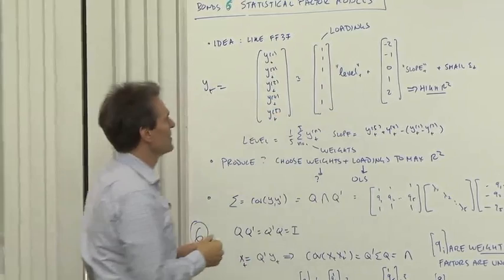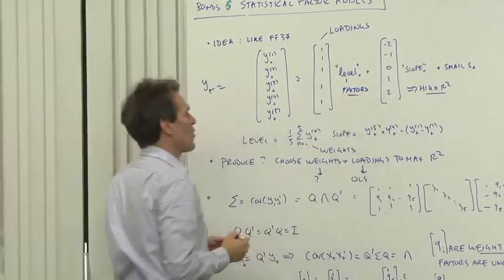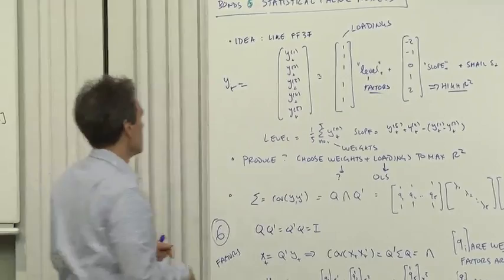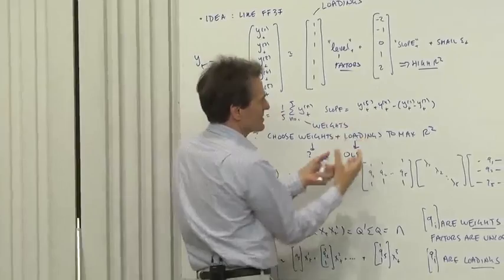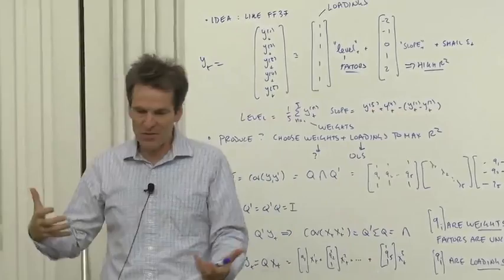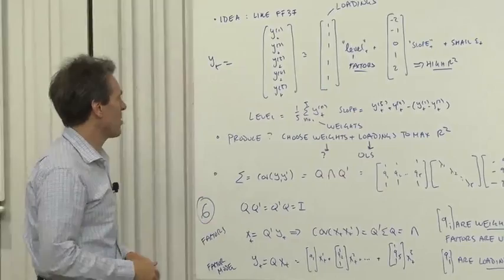So these are called loadings, the amount by which each yield moves when a factor moves. These things are called the factors, of course, level and curvature. And the other question is, how do you create the factors from the data? Well, we could follow Fama and French. We could create the level factor as the average of all yields, and the slope factor as sort of a HML where the long ones going up and the short ones going down.